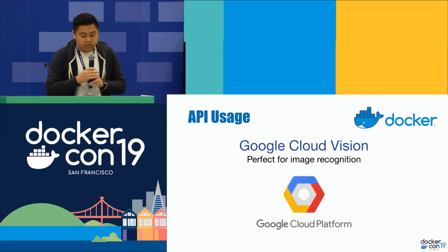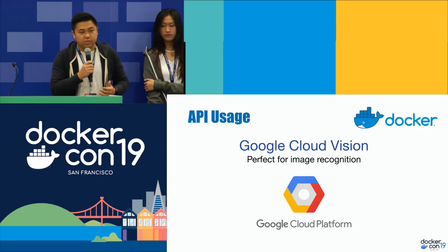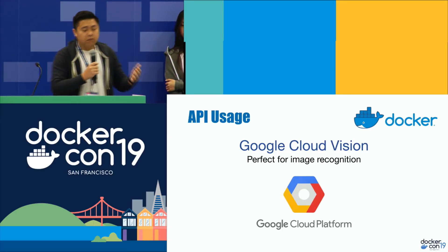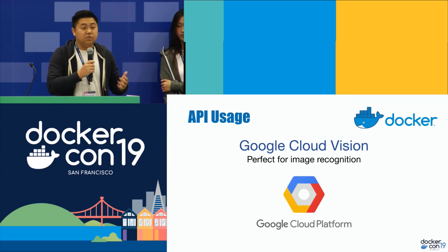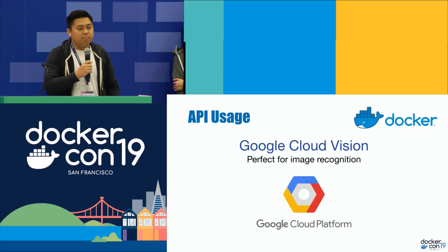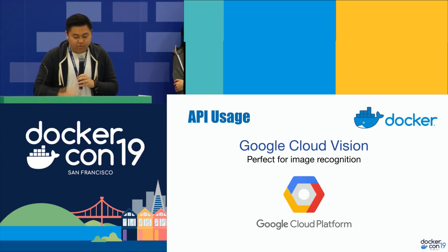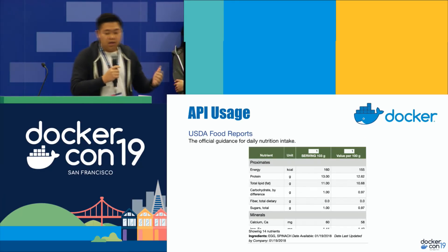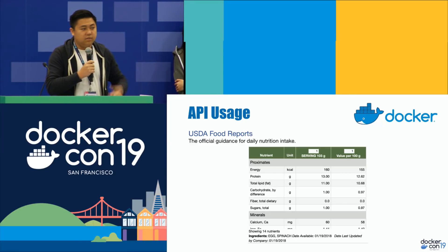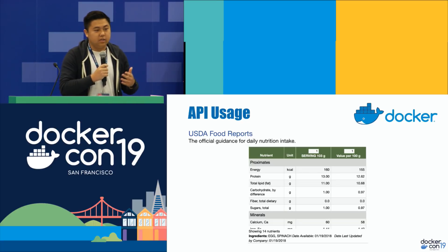Now let's move on to the API usages in our app. We firstly decided to use Google Cloud Vision's platform API for food image recognition. We wanted our app to be able to scan food and recognize its nutrients and content. We found Google Cloud Vision's API to be quite useful, especially for text recognition. One future area of potential improvement would be building our own computer vision models, but due to our current limitations as college freshmen, we're still deciding on that. We also used an API from the USDA — the United States Department of Agriculture — specifically for food reports.